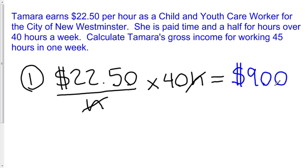Now what's left to do is calculate how much Tamara earned in overtime pay. We know she worked 45 hours in one week, so she's worked five hours of overtime.